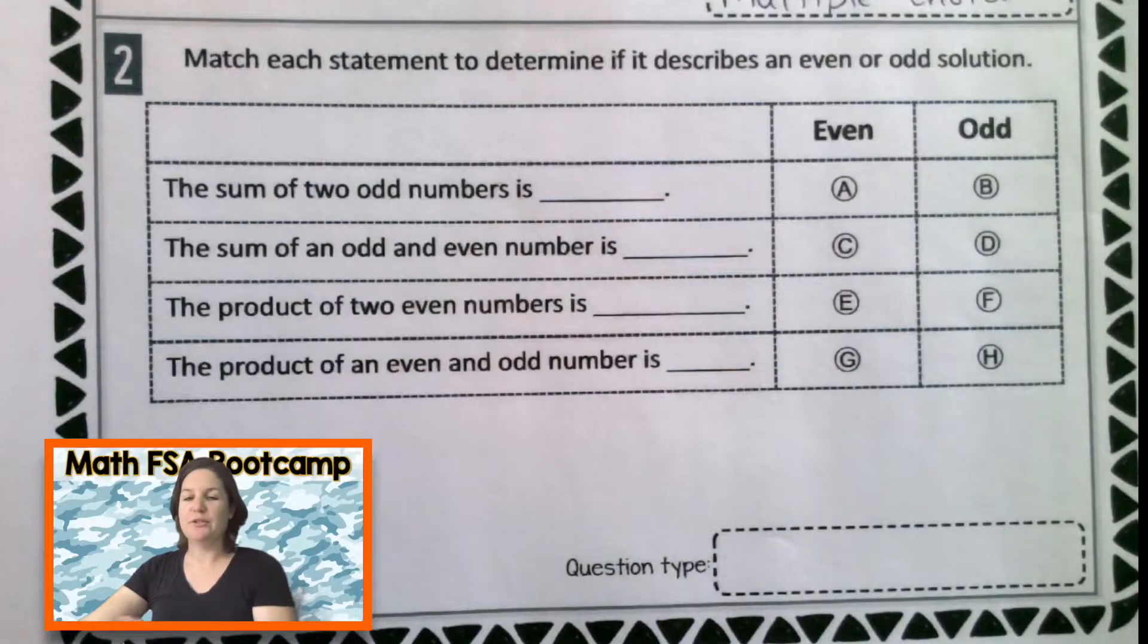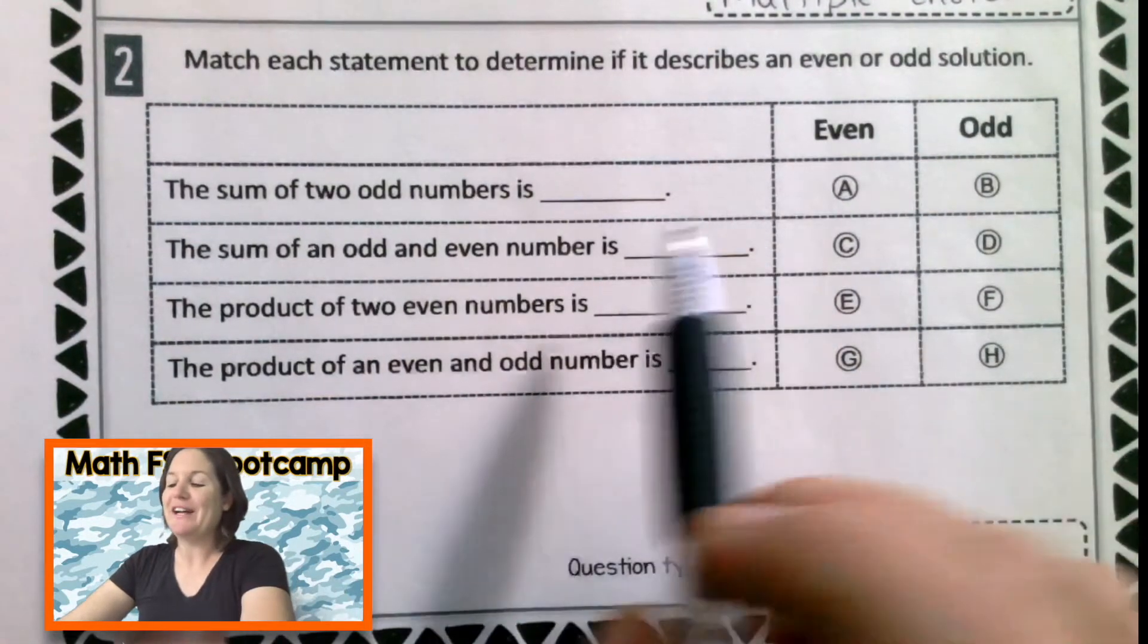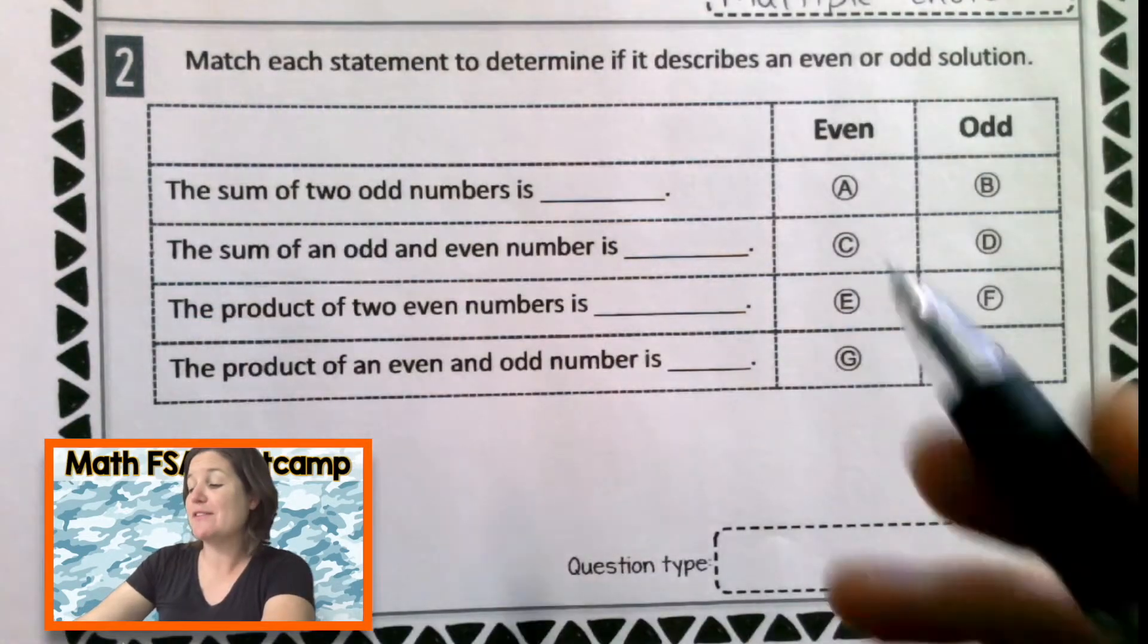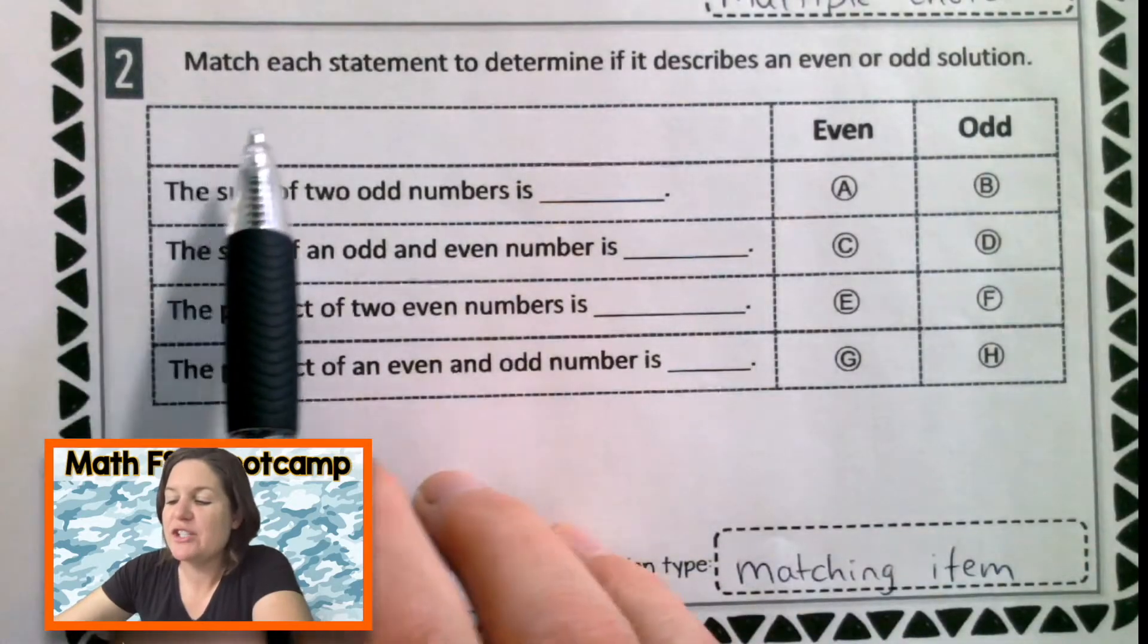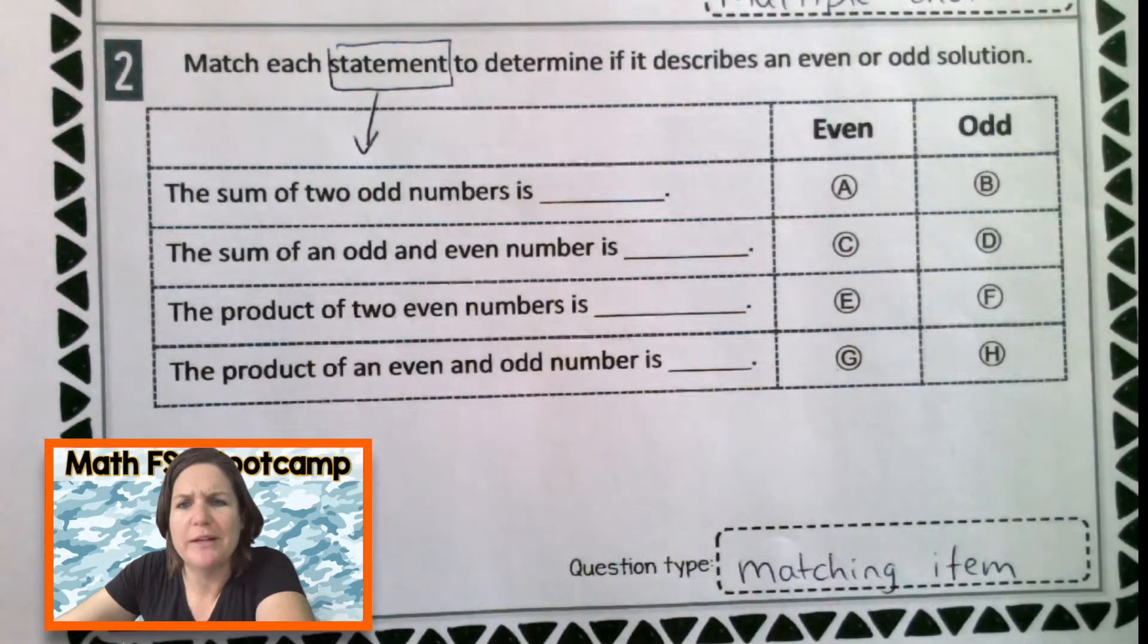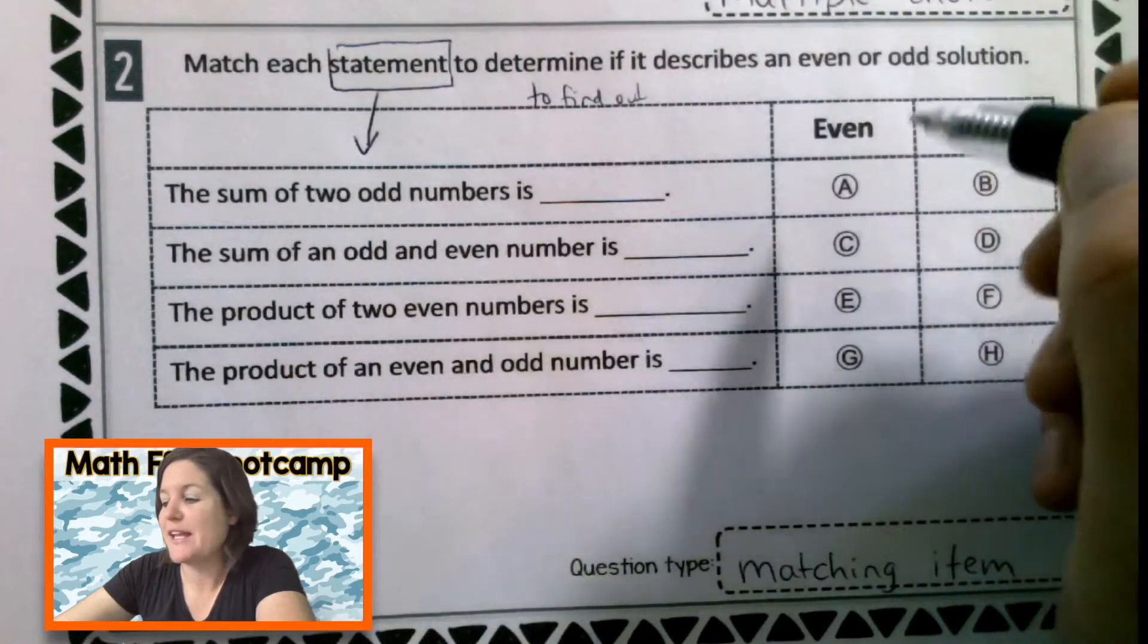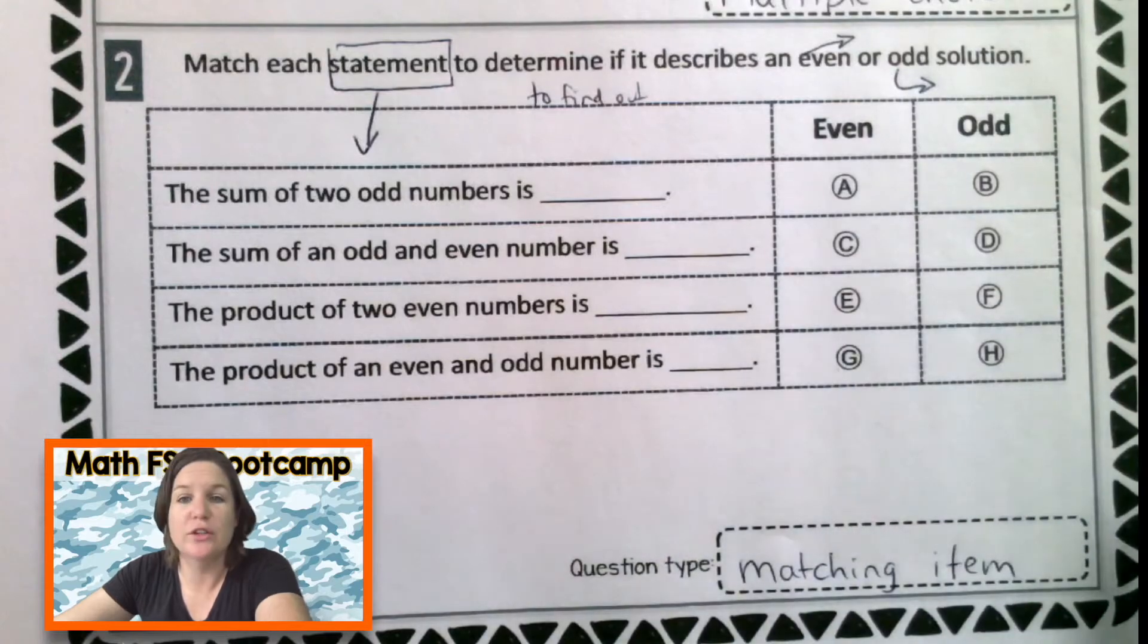Number two. Let's take care of the question type first. You know, this is one of my favorites. We've got some rows. We've got some columns. We are matching them. So this is a matching item question. I love these. Match each statement. Those are down here. To determine. What does determine mean? To find out if it describes an even or an odd solution.